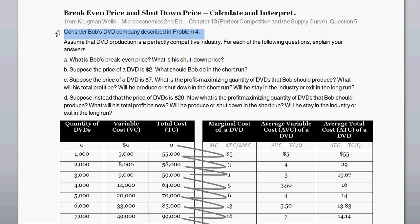This question starts off with: Consider Bob's DVD company described in Problem 4, the previous problem. Assume that DVD production is a perfectly competitive industry. With a perfectly competitive industry, there are some simplifying assumptions: all DVDs are identical commodities, there's free entry and exit with no additional costs, and an individual firm has no power to influence price. If this firm chooses to lower or raise price, that doesn't impact the market price — all firms are price takers.